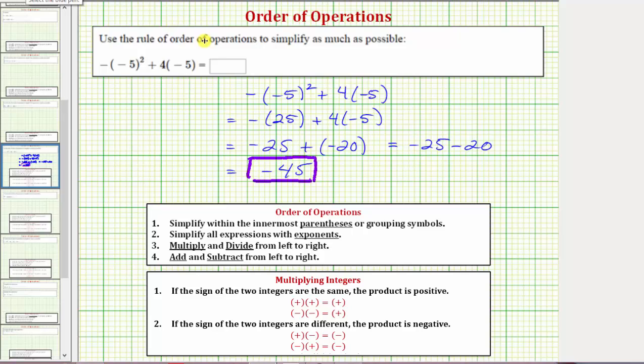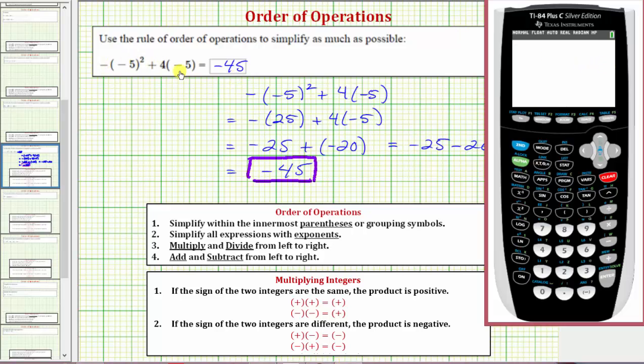So the expression simplifies to negative forty-five. Let's also verify this on the graphing calculator. To do this, we enter the expression as it's given: negative, open parenthesis, negative five, close parenthesis, squared, plus four, open parenthesis, negative five, close parenthesis, enter. Notice how we do get negative forty-five, which verifies our work is correct.